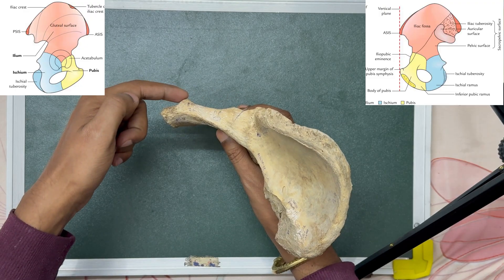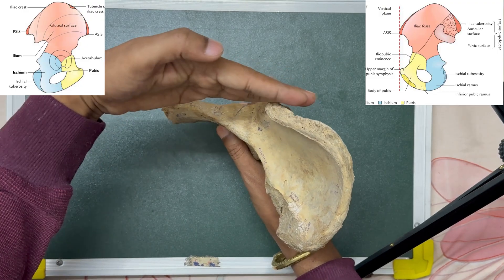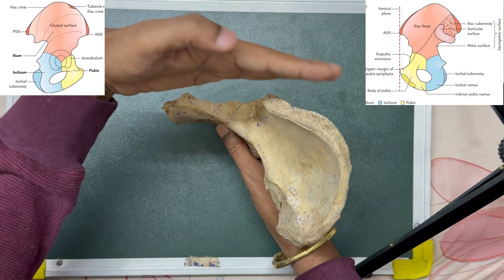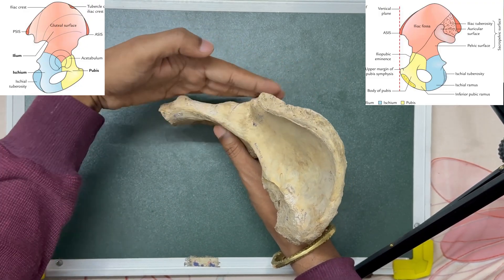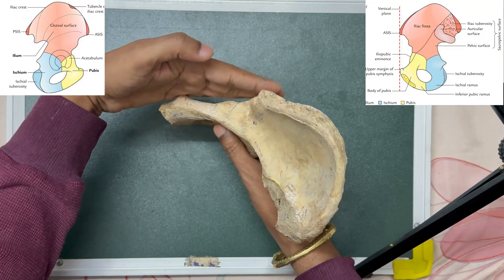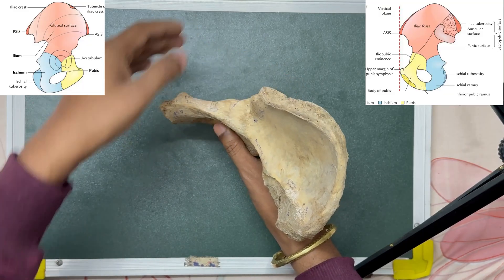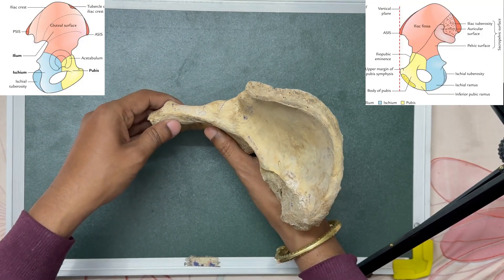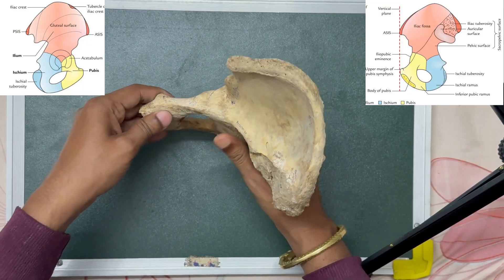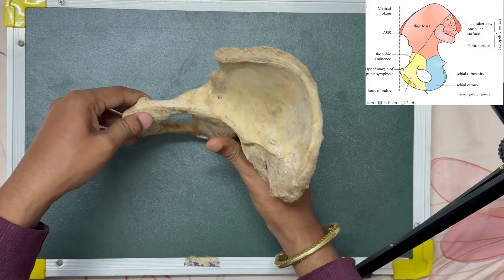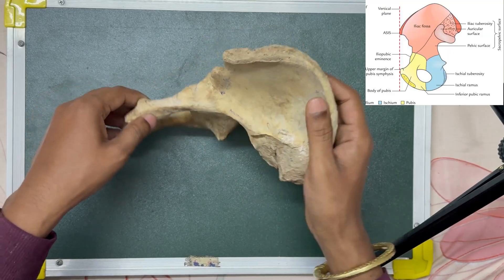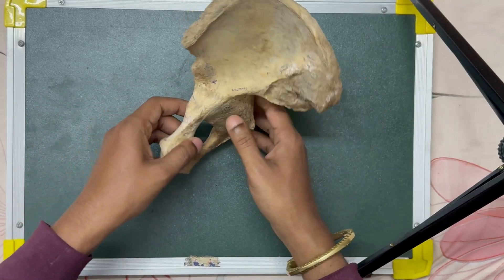The anterior superior iliac spine and the pubic tubercle should be held so that both come in the same coronal plane. This is how the hip bone is held in anatomical position.